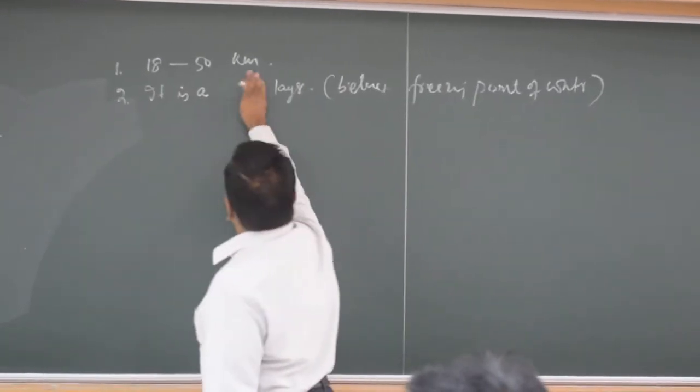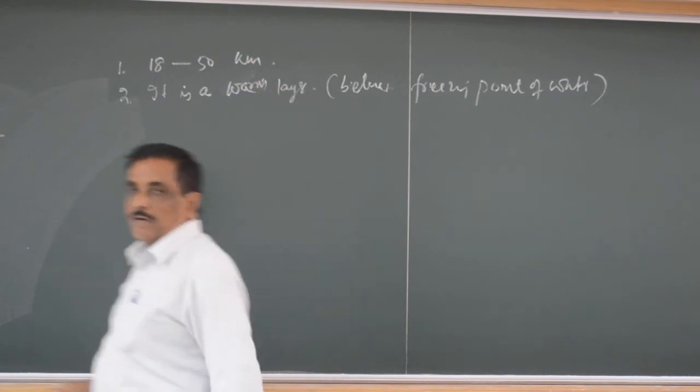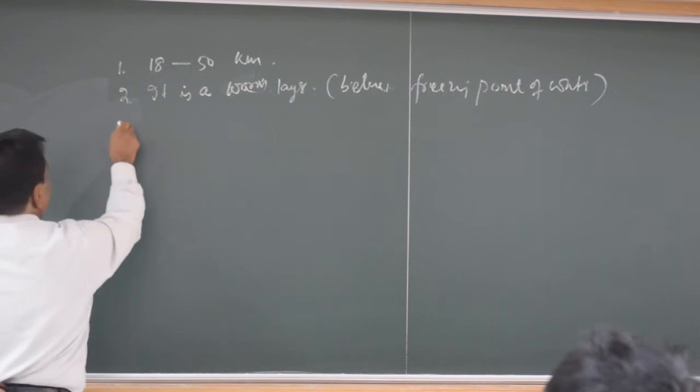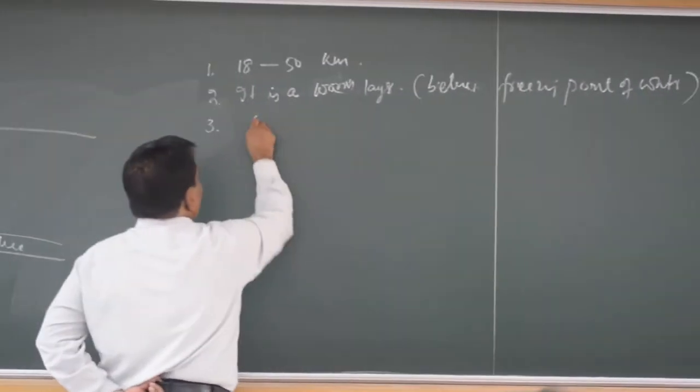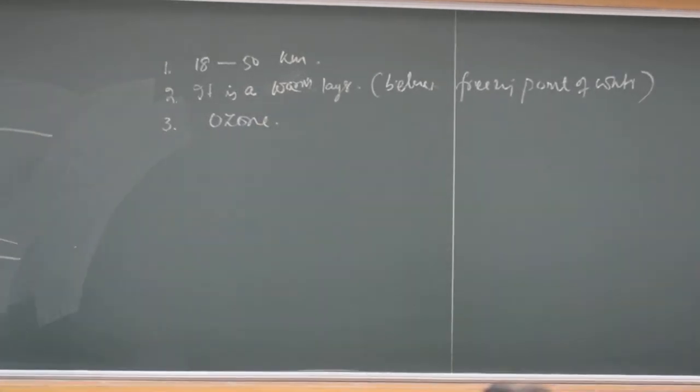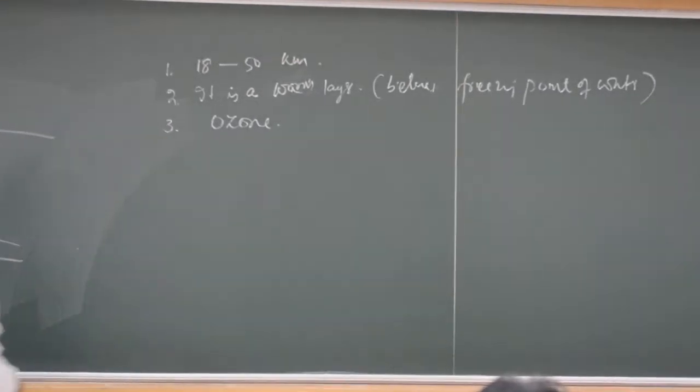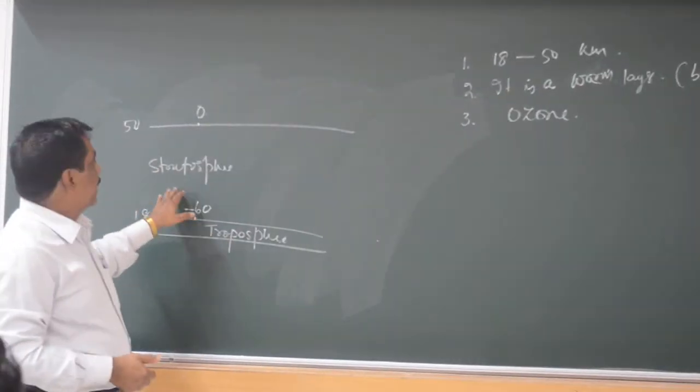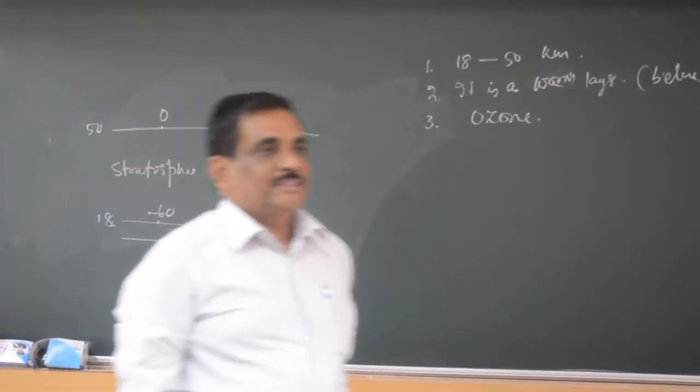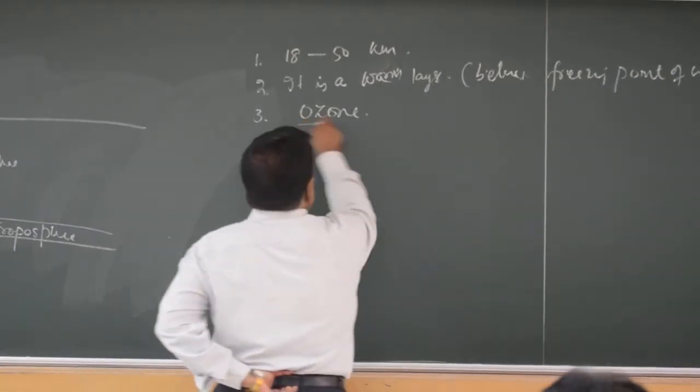As you can write, it is a warm layer. Why this is warm? It is a warm layer, it is not a cold layer. Compared to protosphere here it is minus 60, but as you go up in the stratosphere the temperature rises. It is opposite to the normal condition, that is because of the ozone layer.